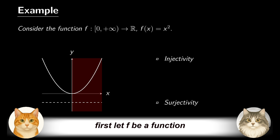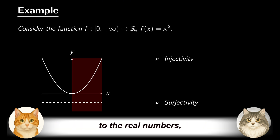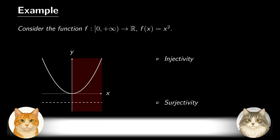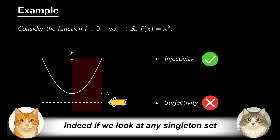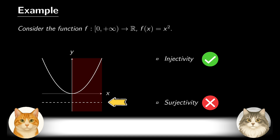First, let F be a function from the set of non-negative real numbers to the real numbers, given by f(x) equals the square root of x. This function is injective, but not surjective. Indeed, if we look at any singleton set consisting of a negative number, the preimage is empty.